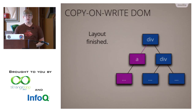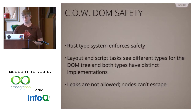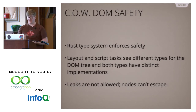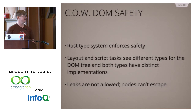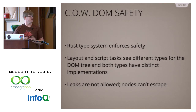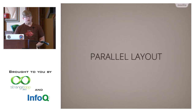We think this should be pretty fast. The Rust type system is a key ingredient in enforcing the safety of these operations. Essentially underneath the covers there's one data structure in memory, but it's exposed as two different objects in the type system — each with different methods and different fields it can look at. The compiler can statically guarantee you're not doing something you shouldn't. Leaks are not allowed and nodes can't escape, which helps ensure you're not doing the wrong thing. That's the COW DOM.